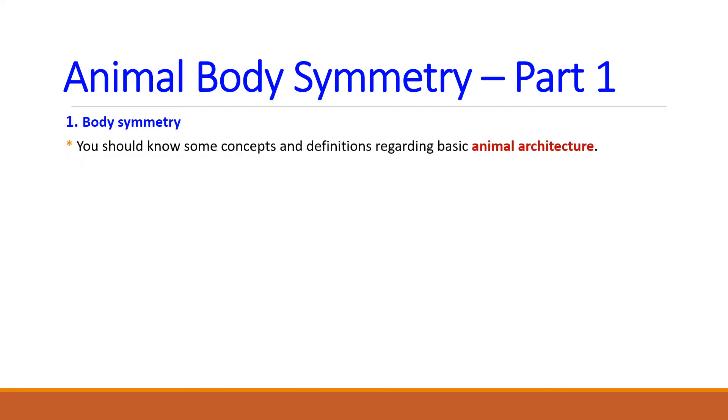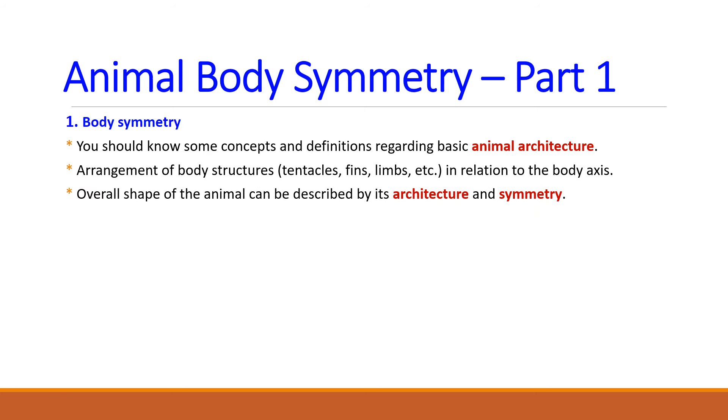Arrangement of body appendages such as fins, limbs, tentacles and antenna in relation to the body axis is known as animal architecture. The overall shape of the animal can be described by its body symmetry and the architecture. Let's look at the types of body symmetry in animals. There are three different types. The first one is asymmetry. Second one is radial symmetry. Third one is bilateral symmetry.